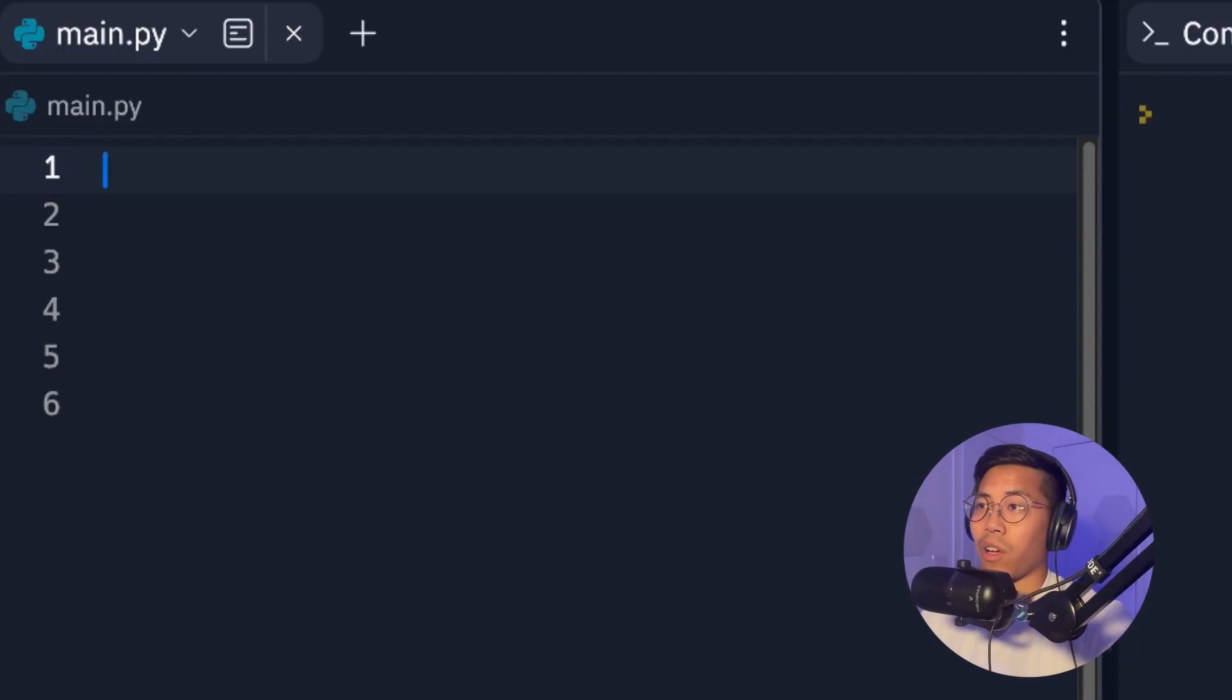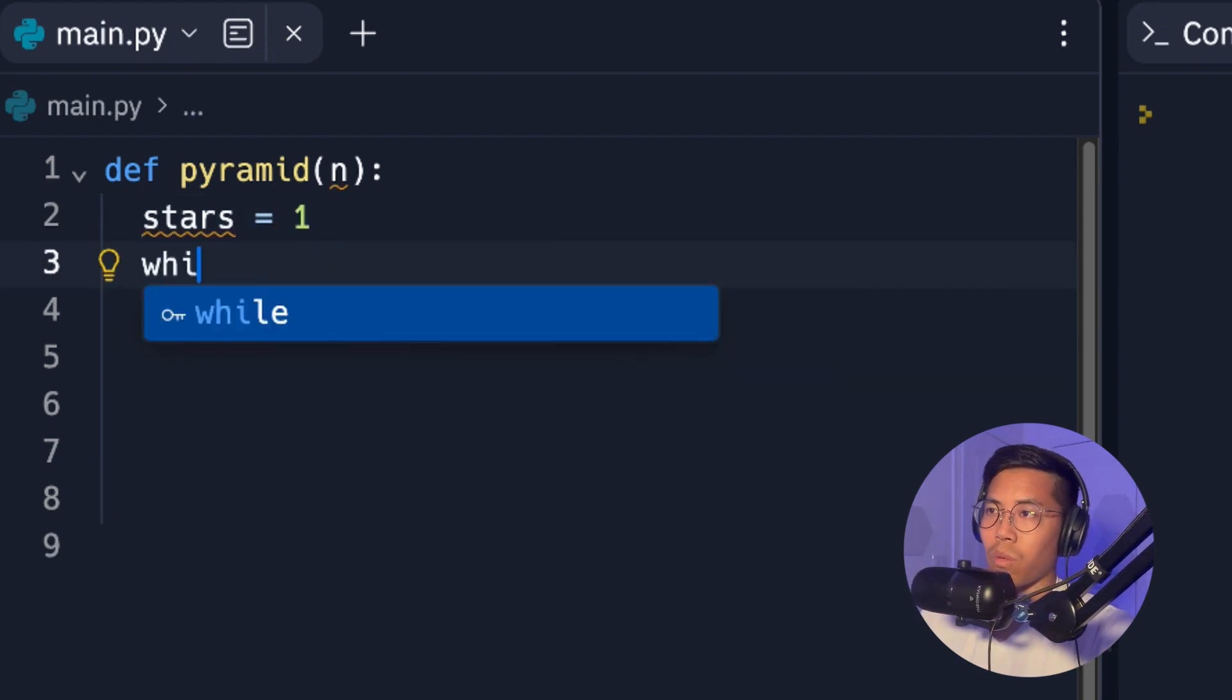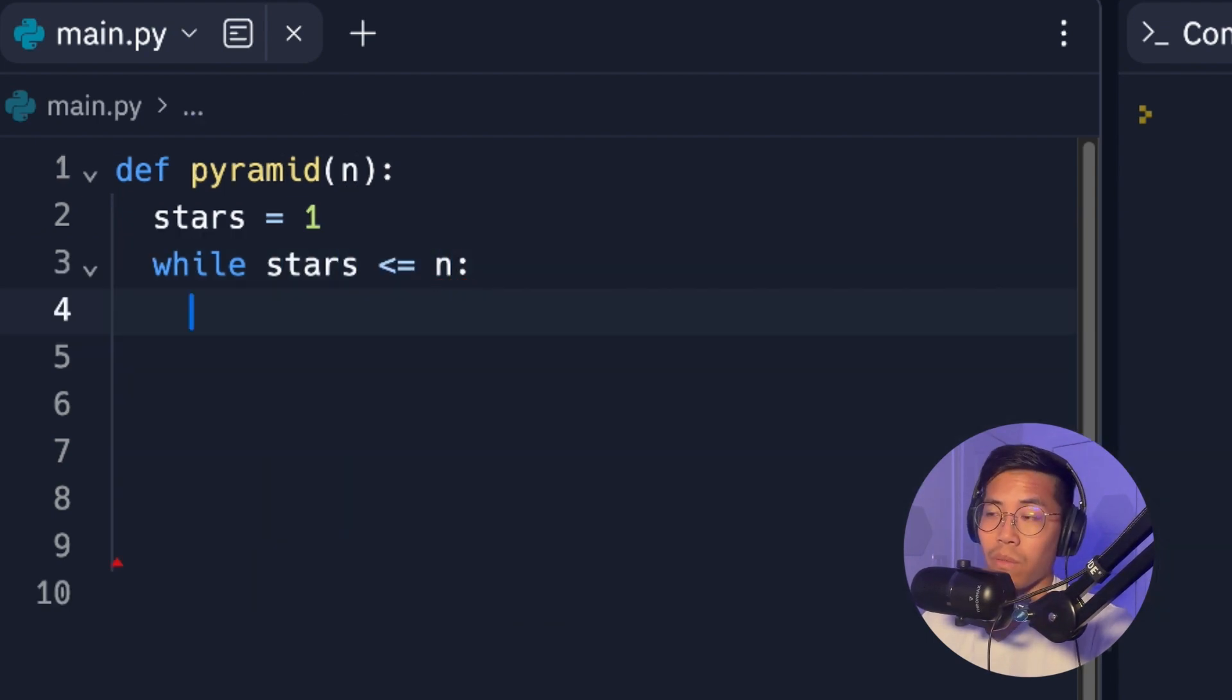So now we can write our code. So let's do define pyramid. And then we take in an n. So now we should create a variable called stars. And we should always start with one star at the beginning. So now we can do a while loop. So while stars is less than equal to n. And now we can use our formula to calculate how many spaces we need. We have spaces equals n minus stars.